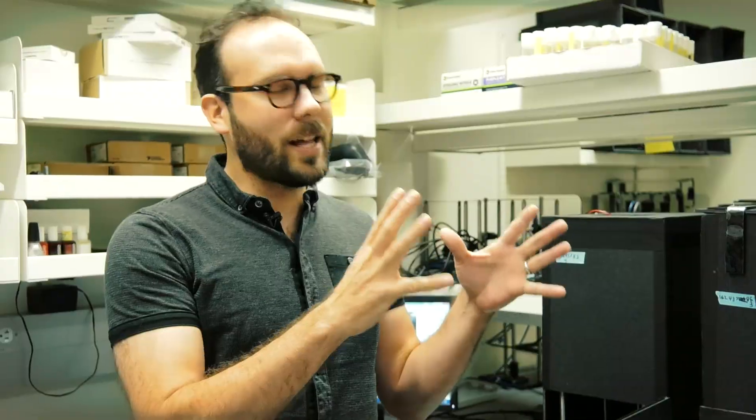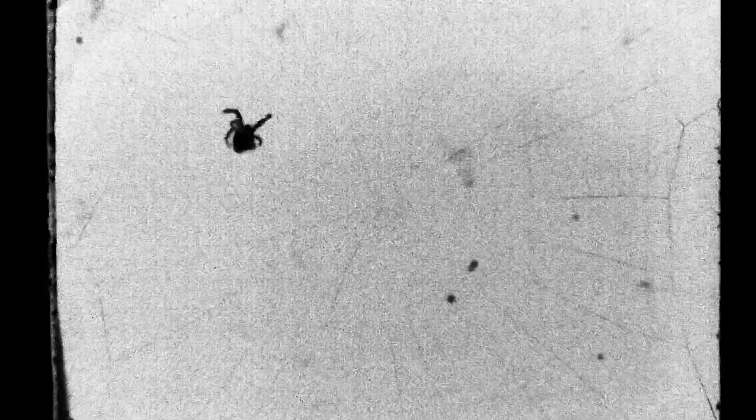They construct these classic webs that people think of when they think of spider webs, with the radii and the spiral. And that structure is an emergent property of behavioral structure. So there's a structure to the behavior that produced that.